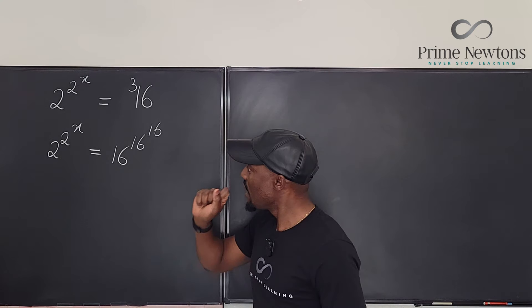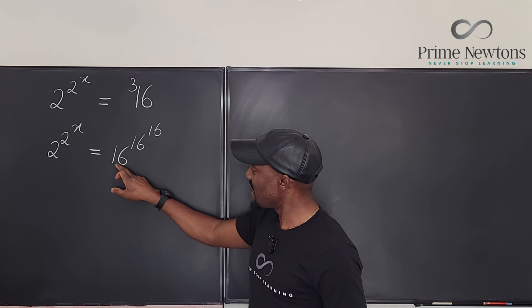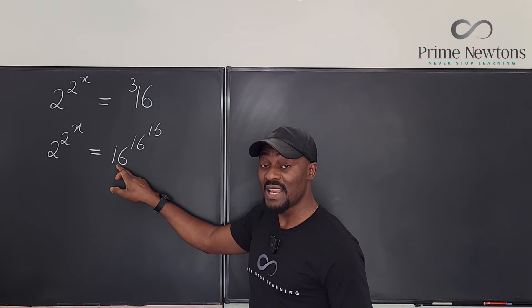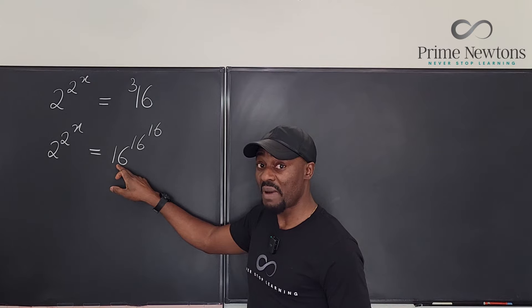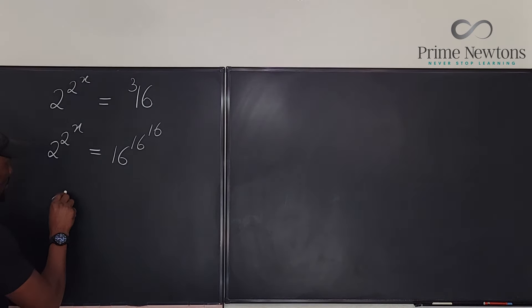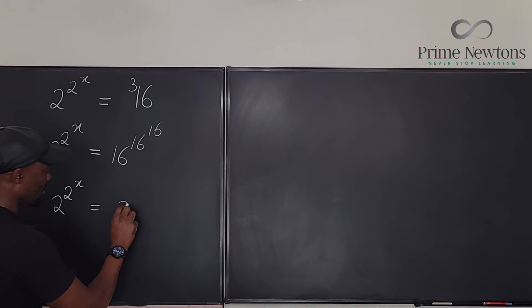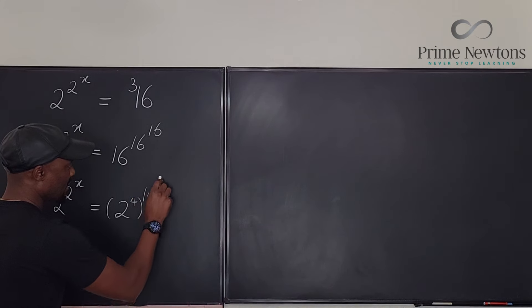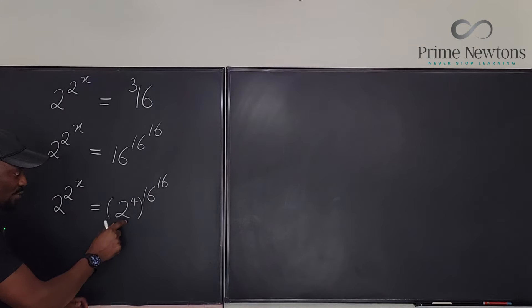So what we do is we know that 16 can actually be rewritten as 2 to the 4th power. So I'm going to say that 2 to the 2 to the x is the same thing as 2 to the 4th power raised to 16 to the 16. See, I just rewrote the bottom.